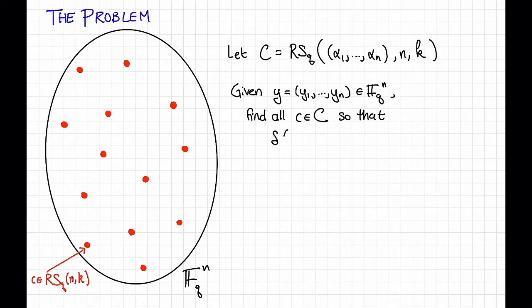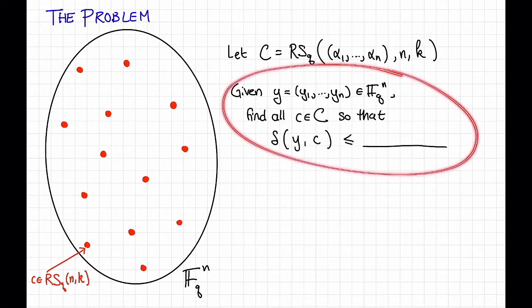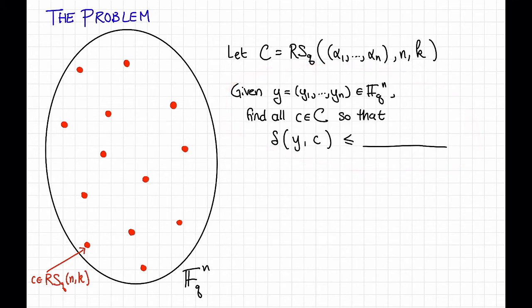In particular, so that the relative Hamming distance between y and c is at most something. We'll come back to that in a moment. So this was the list decoding problem. We are interested in algorithms to solve this, so we'd like to efficiently find all of those code words.